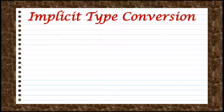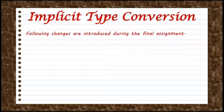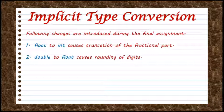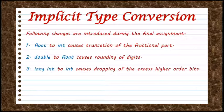The final result of an expression is converted to the type of the variable on the left of the assignment sign before assigning the value. The following changes are introduced during final assignment: first, float to int causes truncation of the fractional part; second, double to float causes rounding of digits; and third, long int to int causes dropping of the excess higher-order bits.